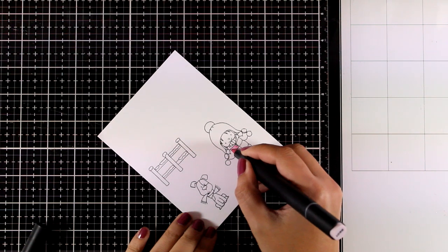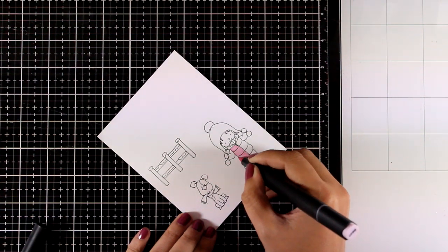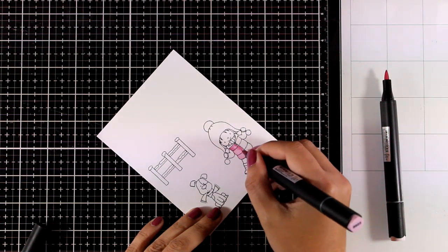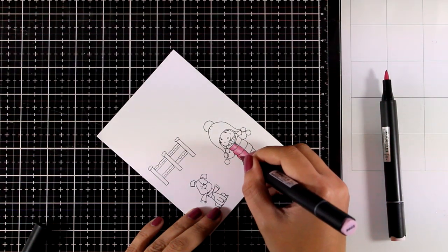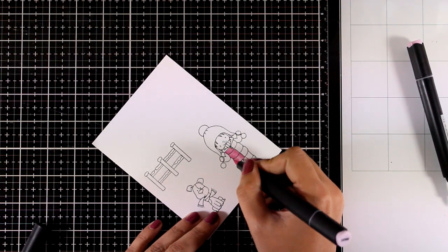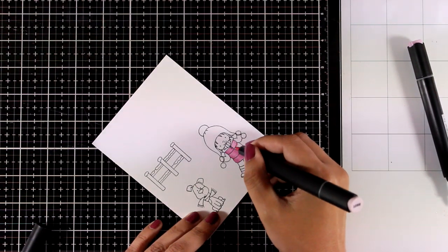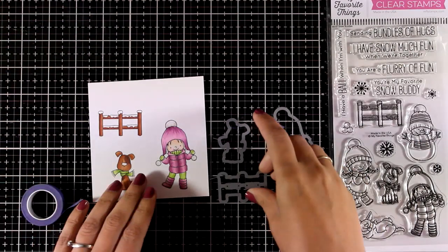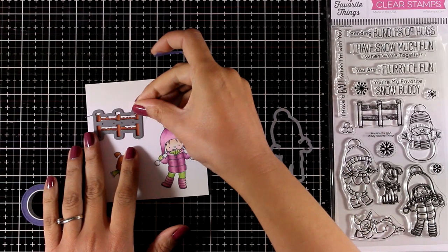To color my images I'm going to use my alcohol markers. Of course you can use any color combo that you love and any color medium that you want. And depending on the color combo that you decide to use it can easily turn into a holiday card. For example you can use greens and reds. However I decided to keep it winter themed.